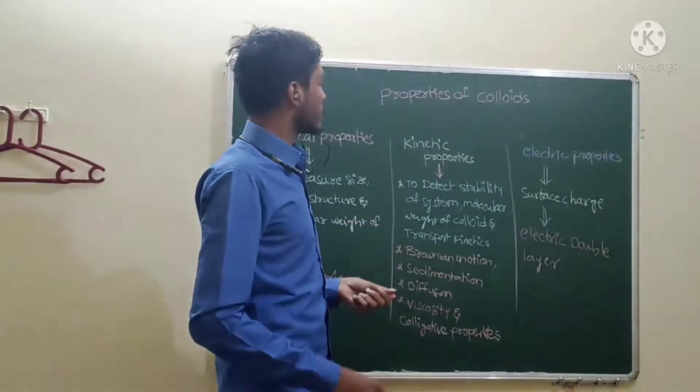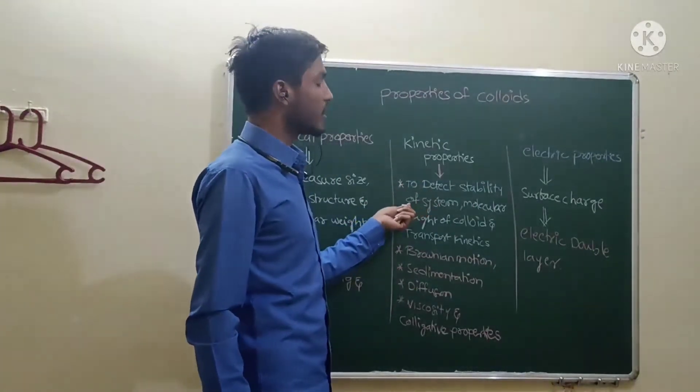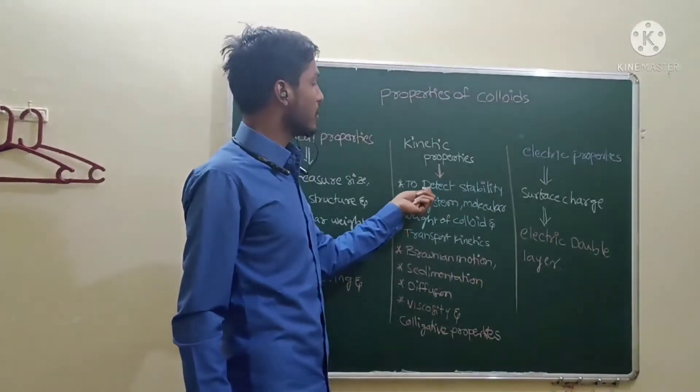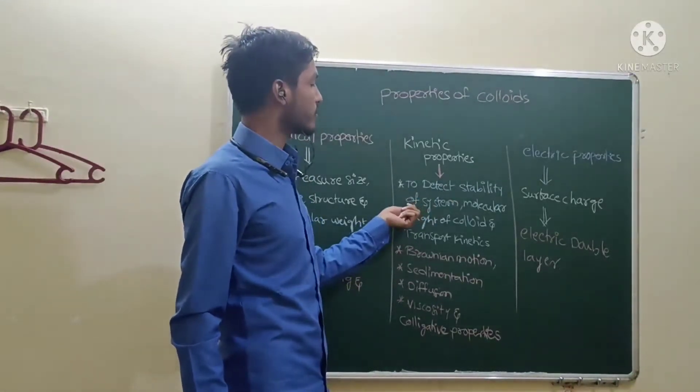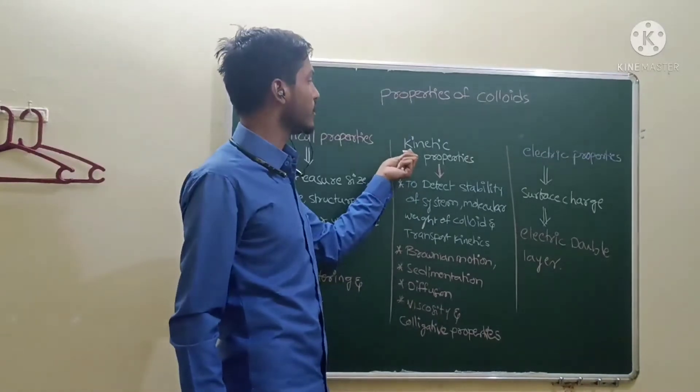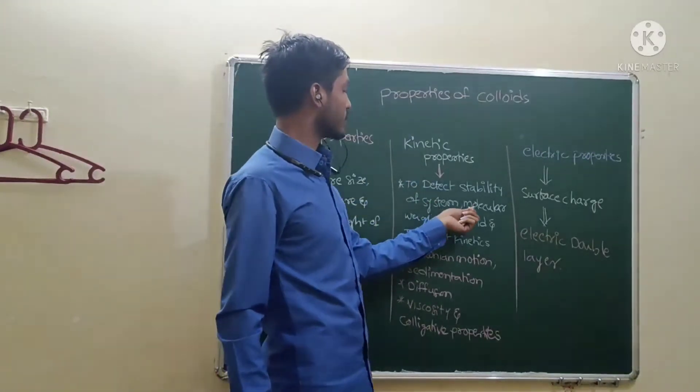Under the kinetic properties, these are used to detect the stability of the system. Kinetic means movement. Movement of the system means the stability of the system can be determined by using kinetic properties.